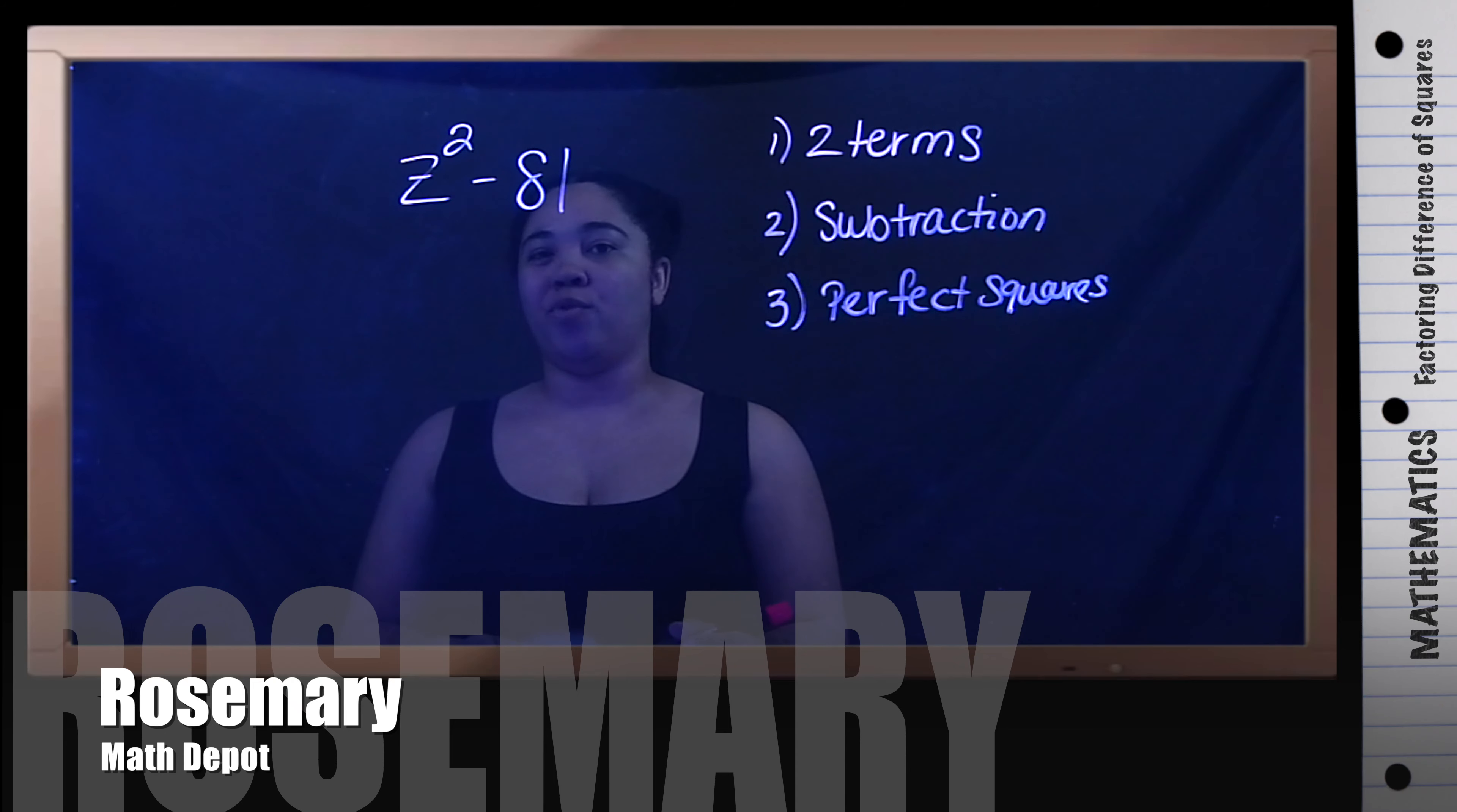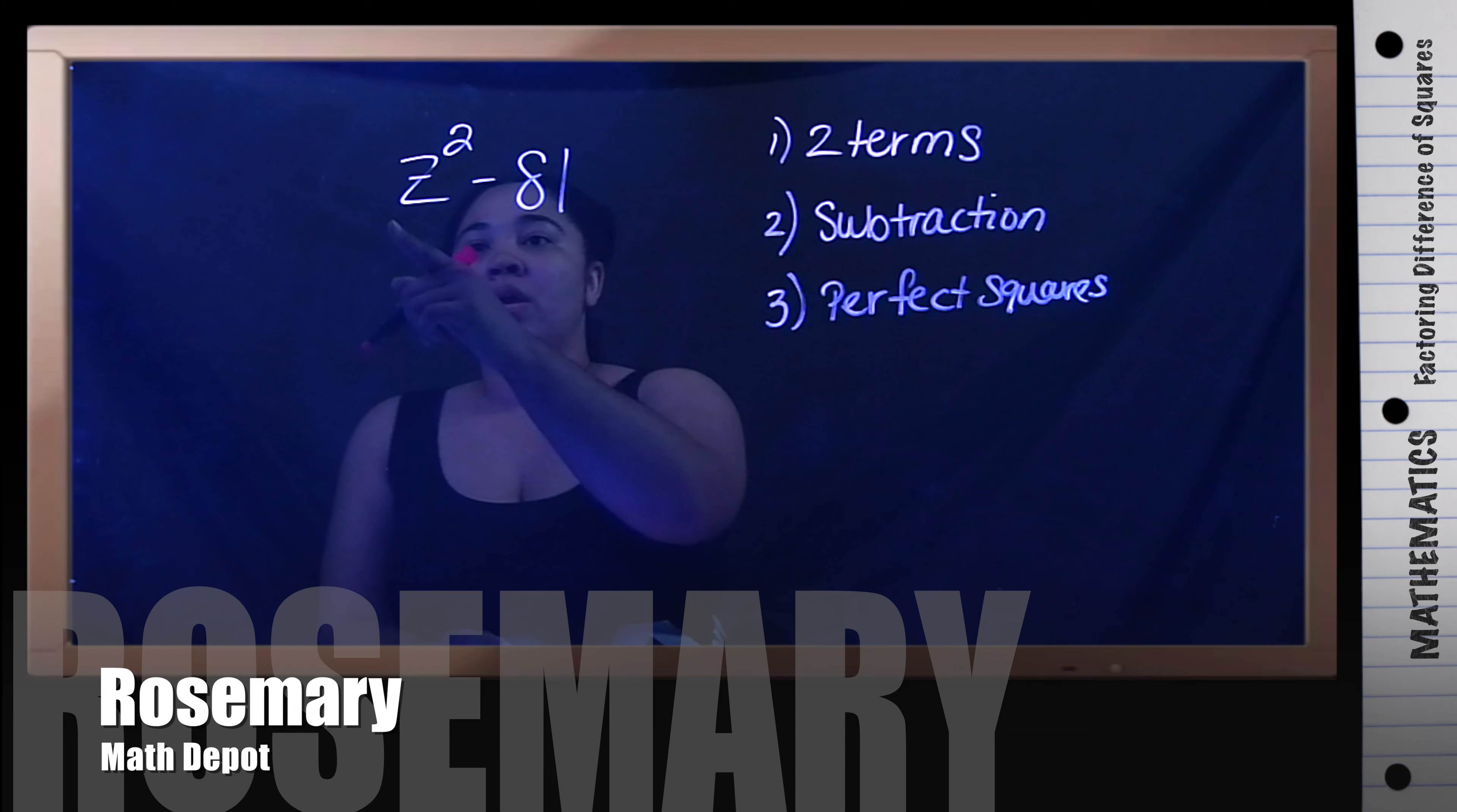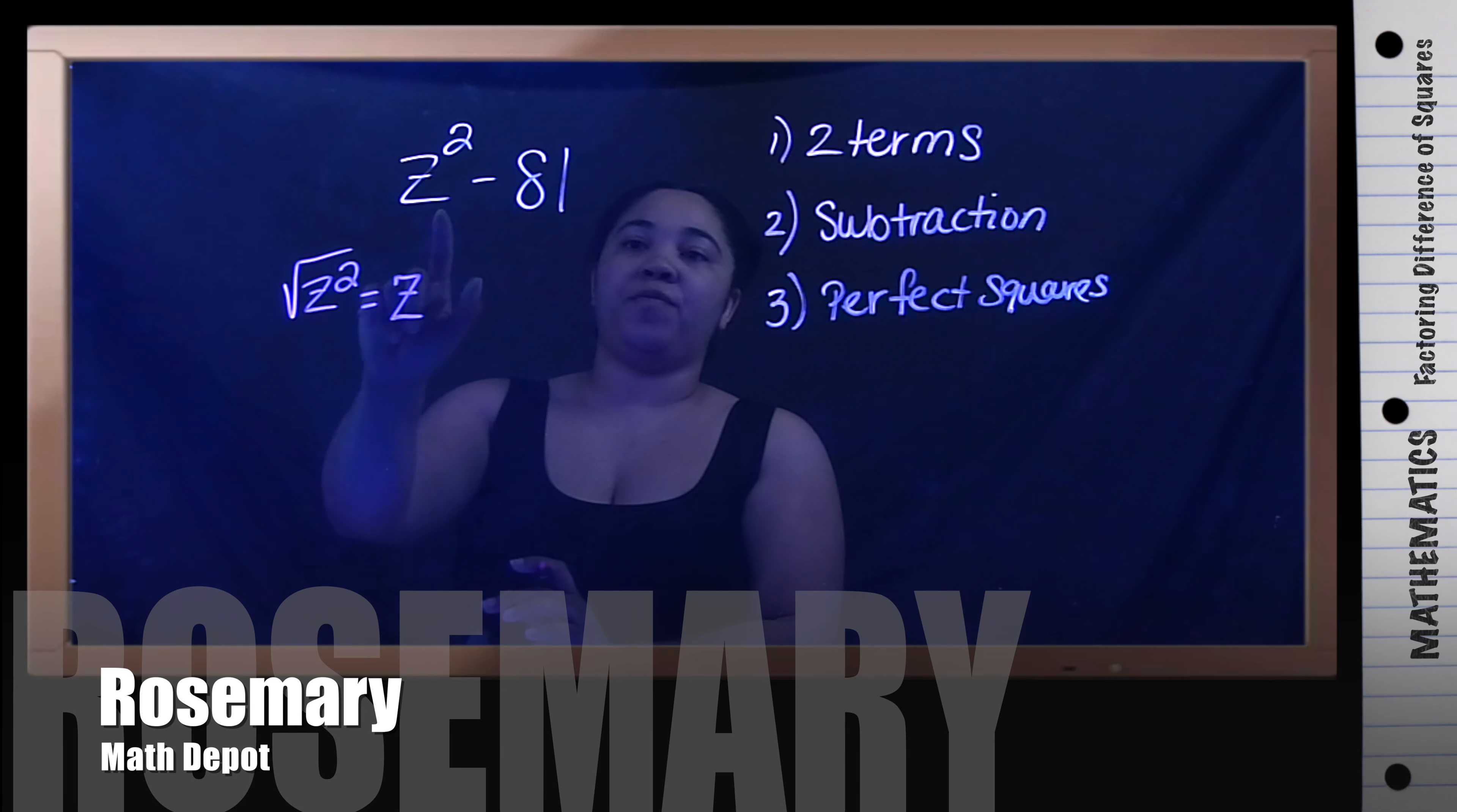Meaning, can I take the square root and get a perfect answer? Well, if I take the square root of z squared, I am left with just one z. So that's perfect.